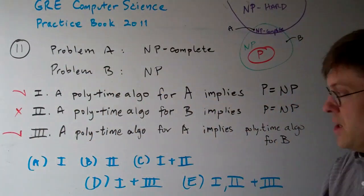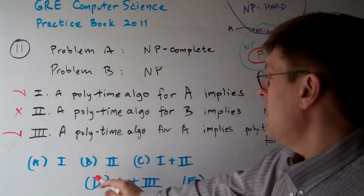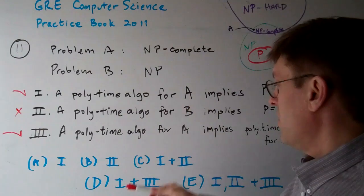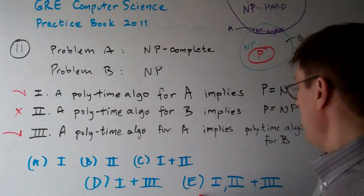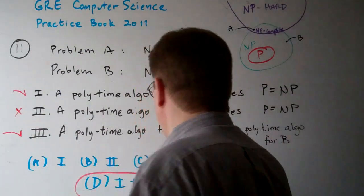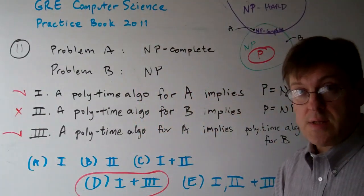So, now let's look at our answer sheet. We have A is one only, B is two only, C is one and two. None of those are right. D is one and three, and E is all three of them. The answer to question 11 is D.